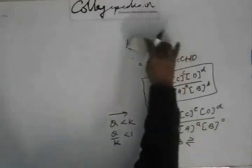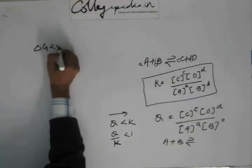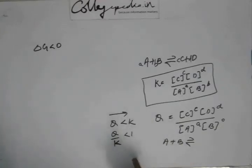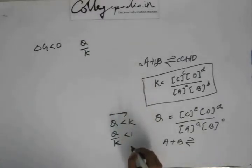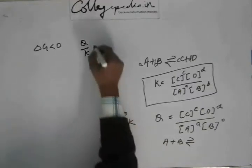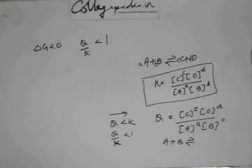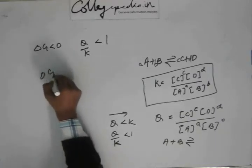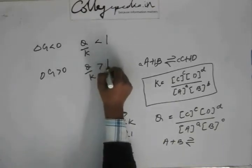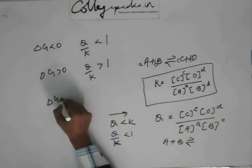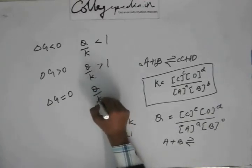Now let's relate this with the information from the expression of ΔG. If ΔG is negative, the reaction is spontaneous — and this corresponds to Q/K being less than 1, so the reaction goes in the forward direction. If ΔG is greater than 0, the reaction is non-spontaneous, which corresponds to Q/K being greater than 1. If ΔG equals 0, the reaction is at equilibrium, which is when Q/K equals 1.